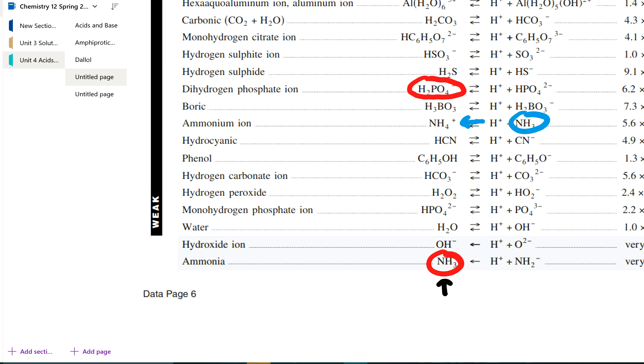this compound here cannot actually go forward. The arrow points the other way. It can't go that way. So NH3 cannot act as an acid. Once again, it's under the acid column, but it cannot act as an acid. It cannot go in the forward direction. So NH3 is not amphiprotic. It would only act as a base.